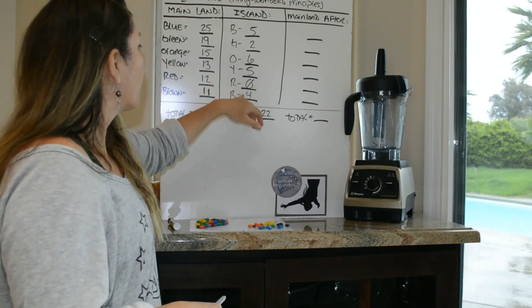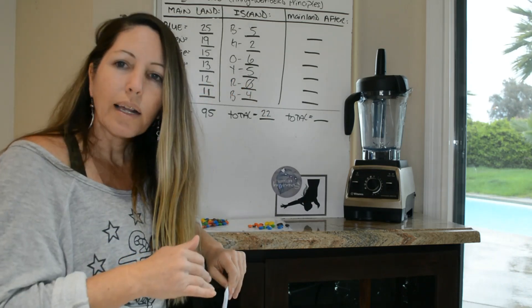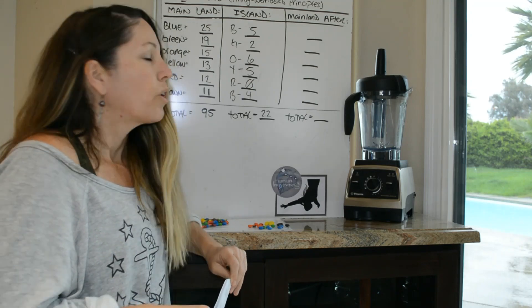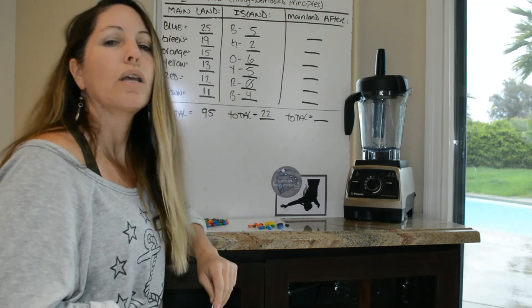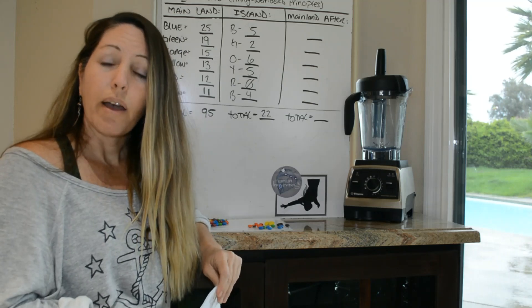Whereas, say, you know, with the red, zero on the island, and then 13 on the mainland. So therefore, that alteration is what's going to drive evolution.